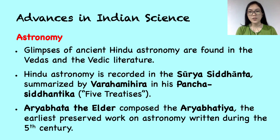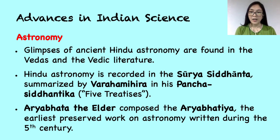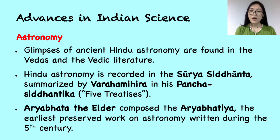Glimpses of ancient Hindu astronomy were found in the Vedas and the Vedic literature. Vedic seers were well-versed in the motion of the sun and the moon, and they had developed a lunisolar calendar to regulate their activities. Further progress in Hindu astronomy is recorded in the Surya Siddhanta, a Sanskrit treatise summarized by Varahamihira in his Pancha Siddhantica, also known as the Five Treatises. These Siddhantas were the result of a great renaissance in Hindu astronomy, which began in the 3rd or 4th century AD and continued right up to the 12th century AD. The Aryabhatiya is the earliest preserved work on astronomy, written during the 5th century, and it laid the foundation of a new school of astronomy known as the Aryabhata School.